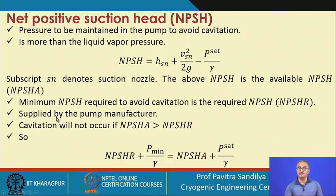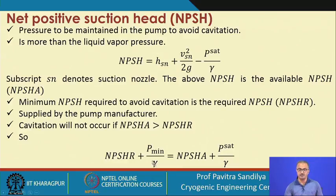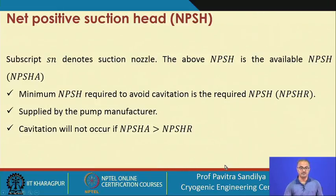NPSHR is the minimum NPSH needed to prevent cavitation, and the actual available NPSH (NPSHA) must be greater than NPSHR. Generally the NPSHR value is given by the manufacturer and the relationship is: NPSHR plus P_minimum divided by gamma equals NPSHA plus P_SAT divided by gamma. The available NPSH (NPSHA) must always exceed the required NPSH (NPSHR) to ensure safe pump operation.